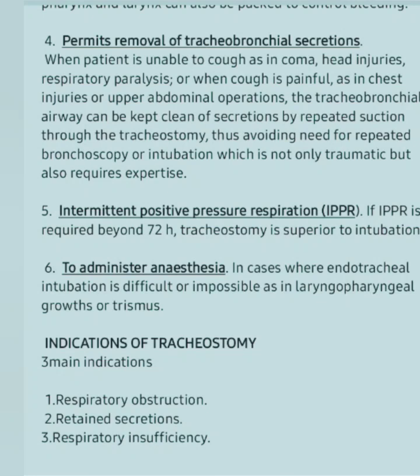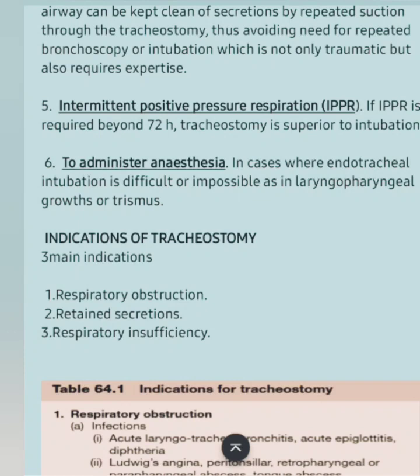The fourth function is that it permits the removal of tracheobronchial secretions when the patient is unable to cough, as in coma, head injuries, or respiratory paralysis, or when coughing is painful as in chest injuries or upper abdominal operations. The tracheobronchial airway can be kept clean by repeated suction through the tracheostomy, avoiding the need for repeated bronchoscopy or intubation. The fifth function is intermittent positive pressure respiration — if required beyond 72 hours, tracheostomy is superior to intubation.